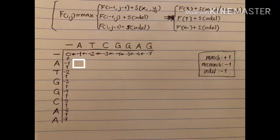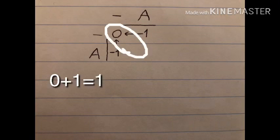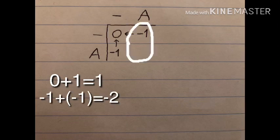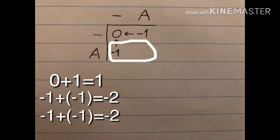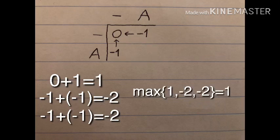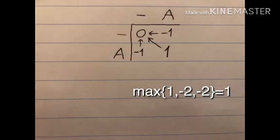Back to our table, to figure out the value of the current cell, we zoom in and find the maximum of three possible values. The first option is the value of the diagonal cell plus a match, because we have an A and an A. The cell up top has value minus one; adding indel (minus one) gives negative two. The cell to the left is also minus one; adding indel gives negative two as well. The maximum is one, so we write it in the current cell and draw an arrow back to the diagonal cell that produced it.